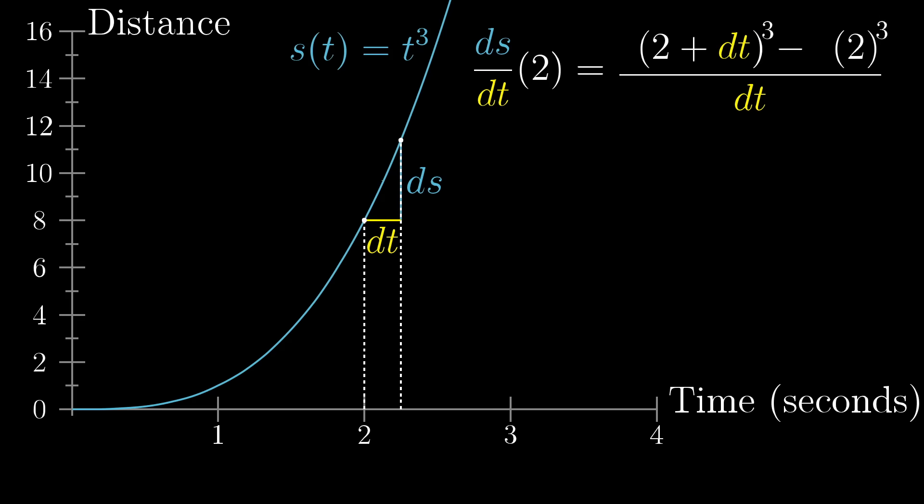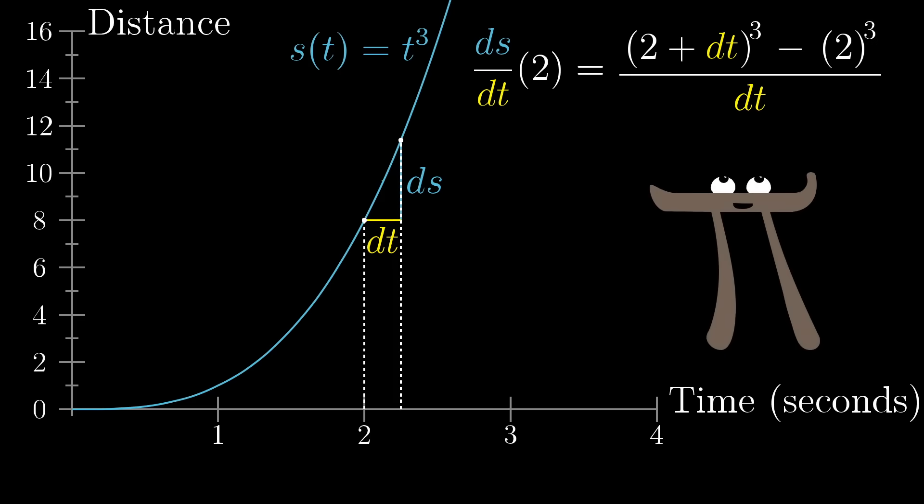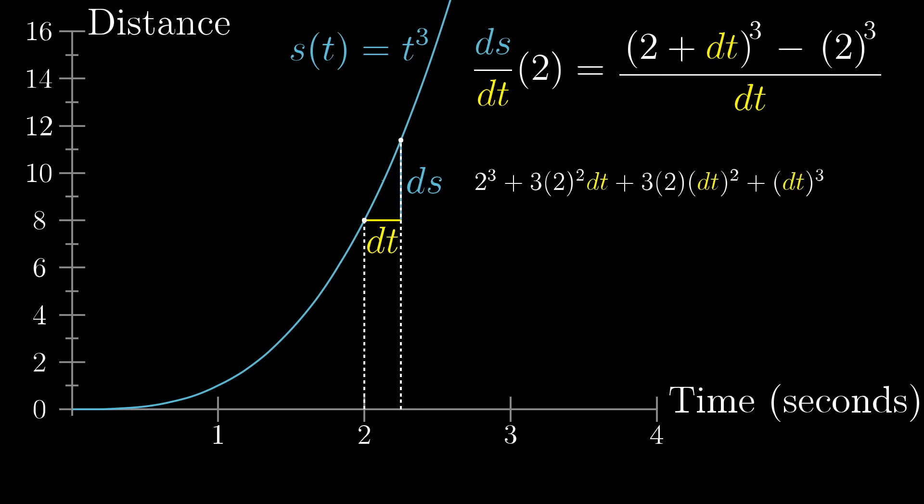Since our function is t cubed, that numerator looks like (2 plus dt) cubed minus 2 cubed. And this is something we can work out algebraically. Again, bear with me, there's a reason that I'm showing you the details here. When you expand that top, what you get is 2 cubed plus 3 times 2 squared dt plus 3 times 2 times dt squared plus dt cubed, and all of that is minus 2 cubed.